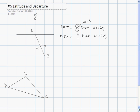Likewise, if the bearing angle is east, then the departure is positive. And if the bearing angle is west, the departure is negative.